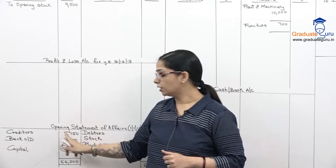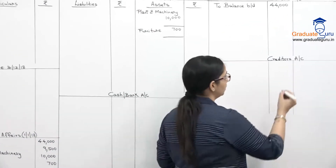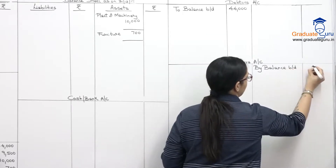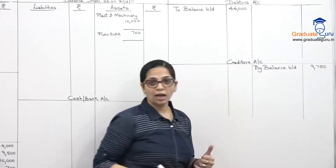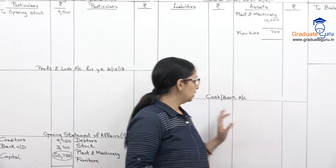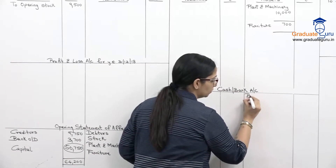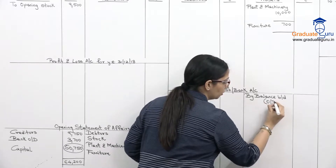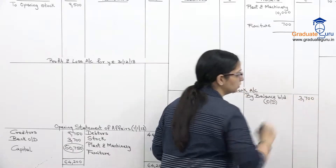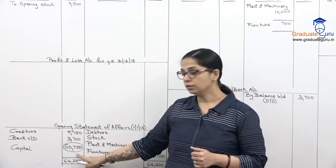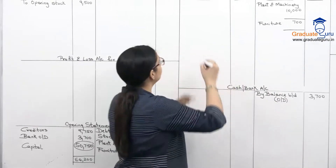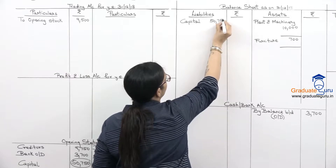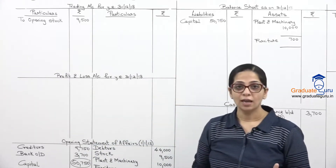Creditors of 9,750 go to the creditors account on the credit side as balance brought down. Bank overdraft of 3,700 goes to the cash bank account on the credit side, since OD is a liability and has a credit balance. Capital of 50,750 goes to the balance sheet inner column, as there will be some additions and subtractions. Opening statement of affairs is now empty.